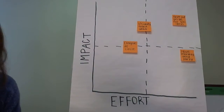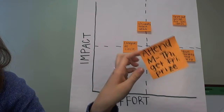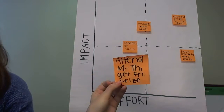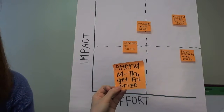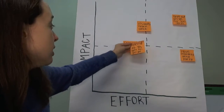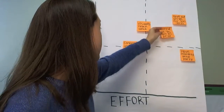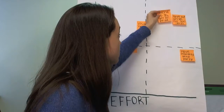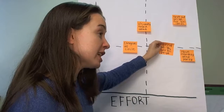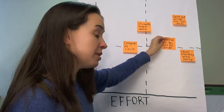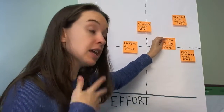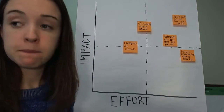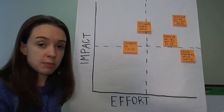Another idea: if a kid attends Monday through Thursday, on Friday they get a prize. Since this is weekly, that prize will be smaller — maybe a special snack, or a book to take home. Kids love getting prizes so the impact might be a little higher, and since it's weekly the effort will probably be pretty high because it's happening every week. But it might start off high and move down if the kids are getting a prize every week and it feels less special. So we'll keep it in the middle.